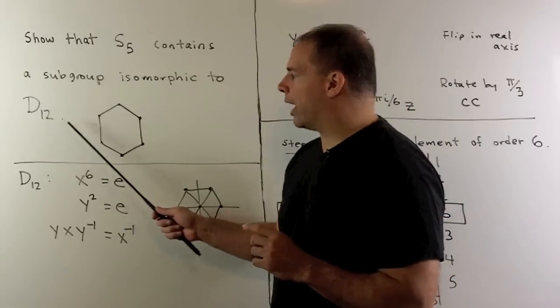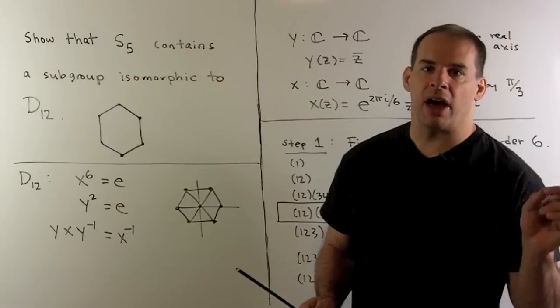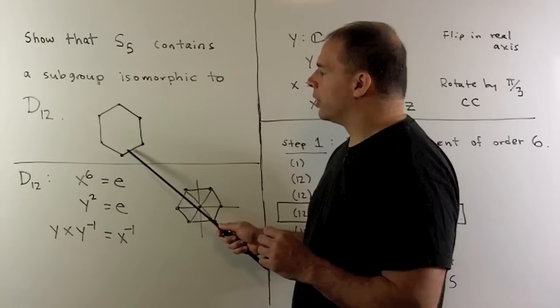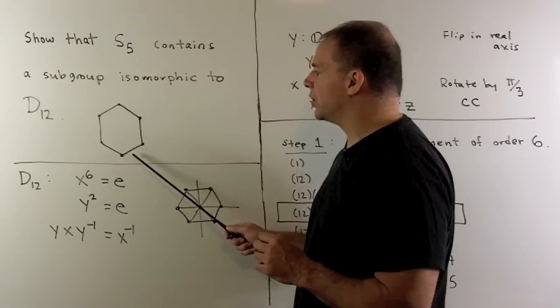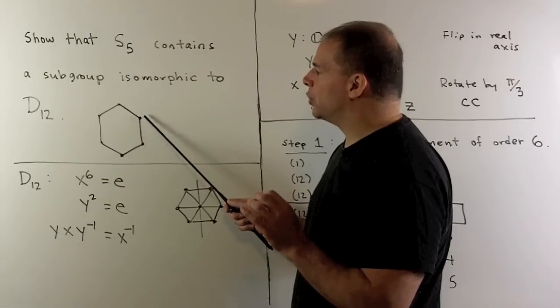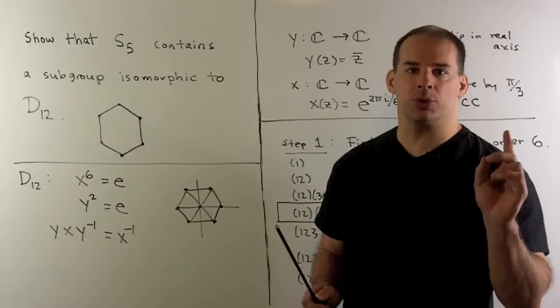Now, D12 is going to be the group of symmetries of a regular hexagon. If we count elements, consider this vertex here. There are six vertices I can send it to. Once we've mapped that vertex, there's then two ways we can orient our hexagon. So we have six times two equals 12 elements.